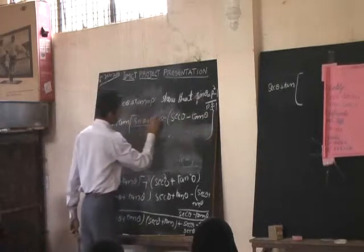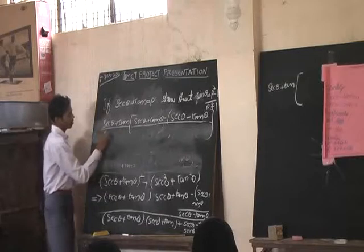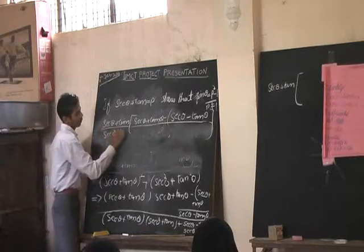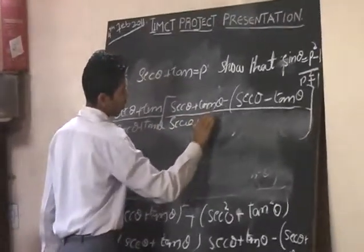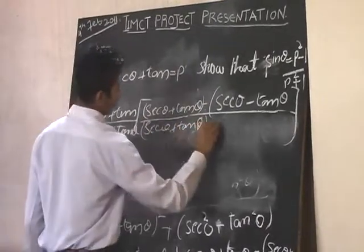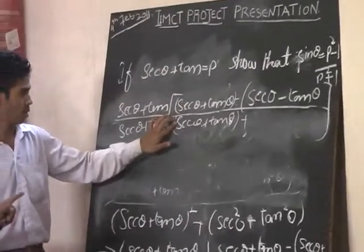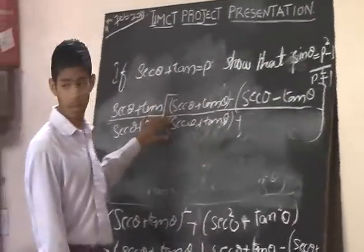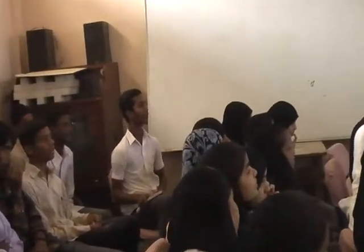Minus, minus. And the remaining is bracket, sec theta minus tan theta, bracket close. Denominator, same procedure. Denominator is common, sec theta plus tan theta, one time. Second is small bracket, sec theta plus tan theta, plus.